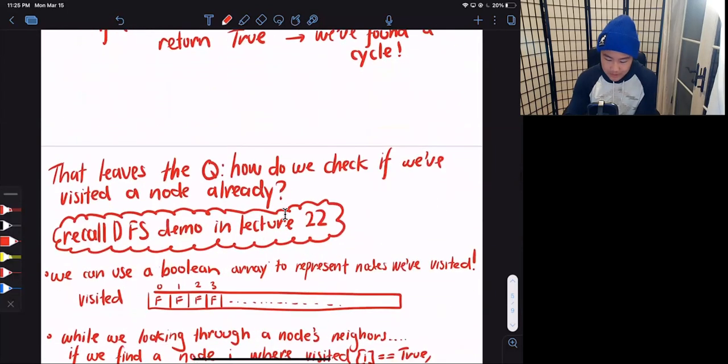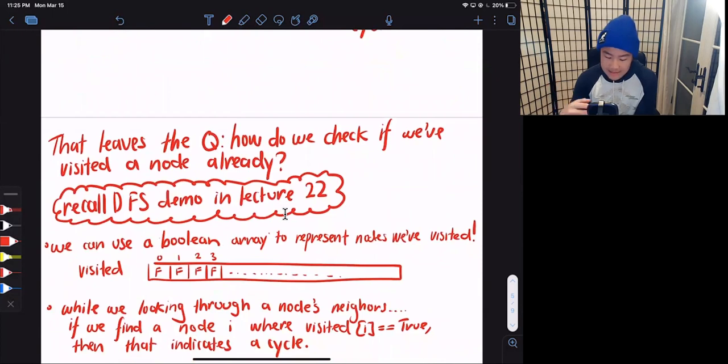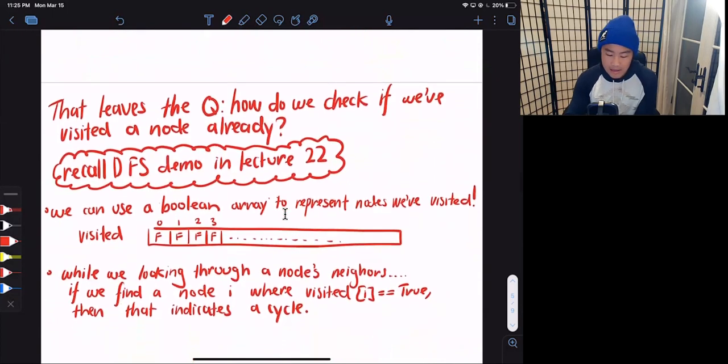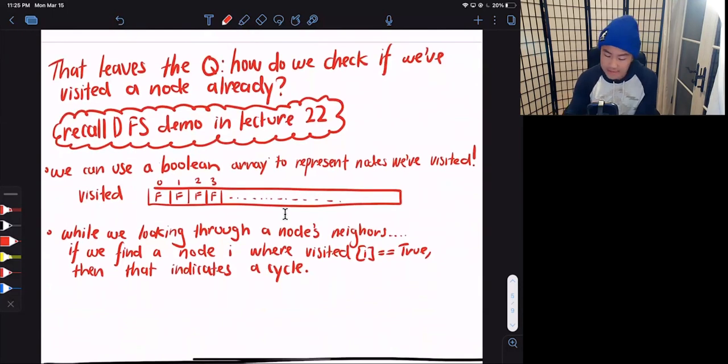So that leaves us to the question, how do we check if we visited a node already? And recall the DFS demo in lecture 22. And so what we can do is we can use a Boolean array to represent the nodes that we visited already. So here's an example of how that will look. Here is an array named visited that maps the label to basically a true or false value, a Boolean value.